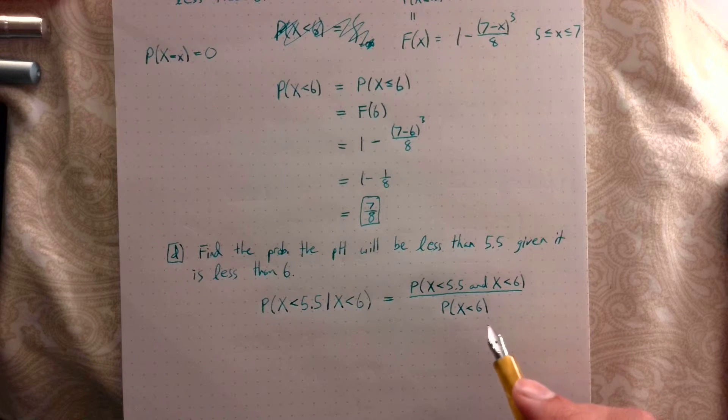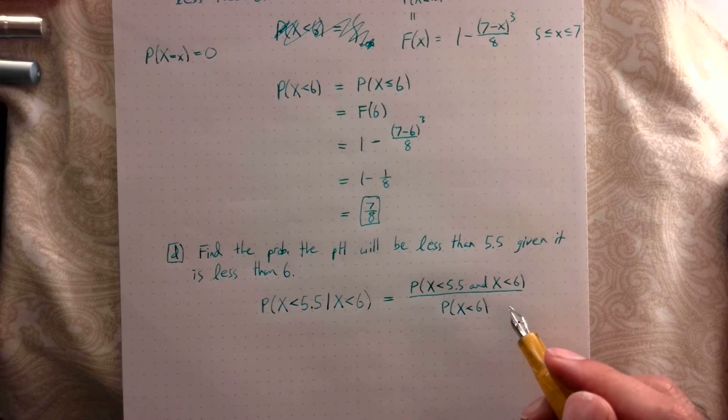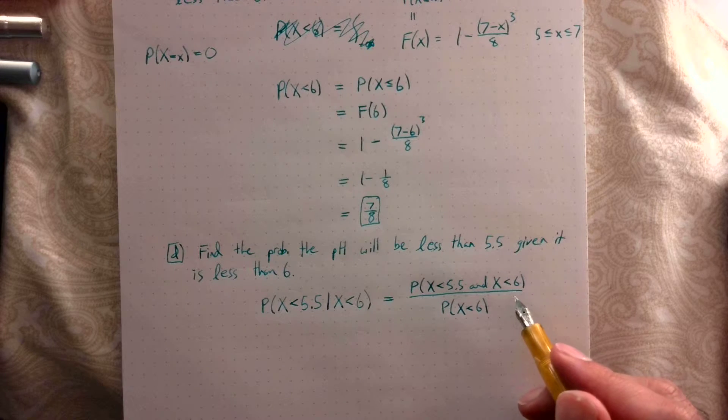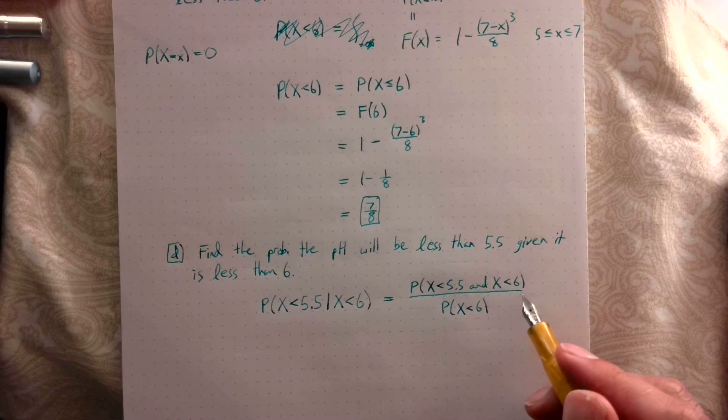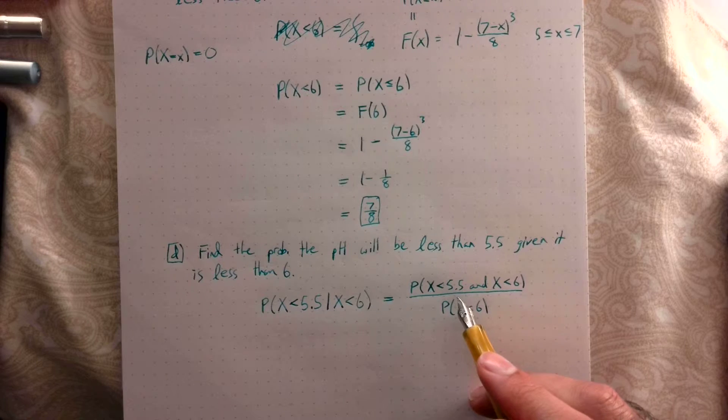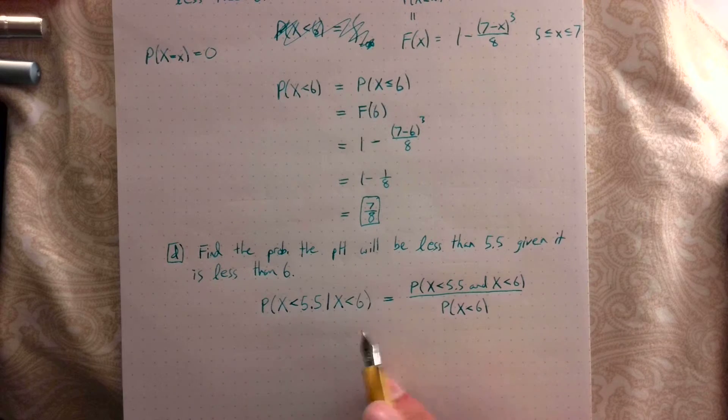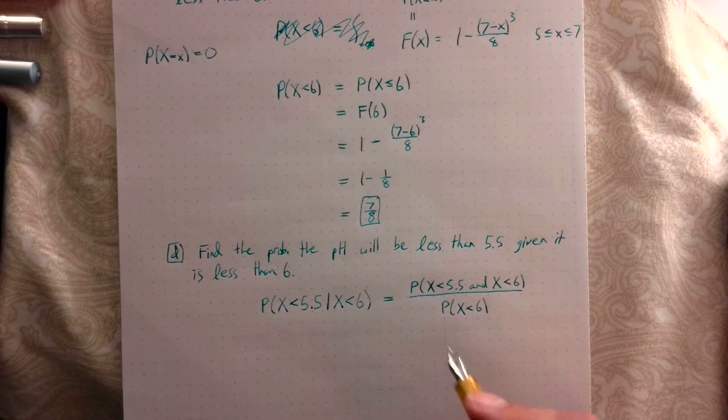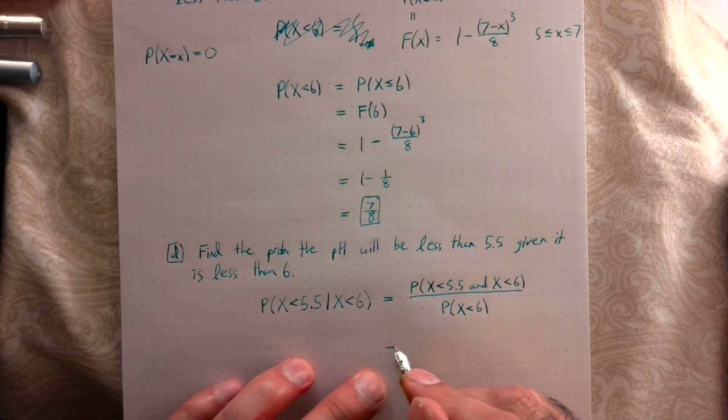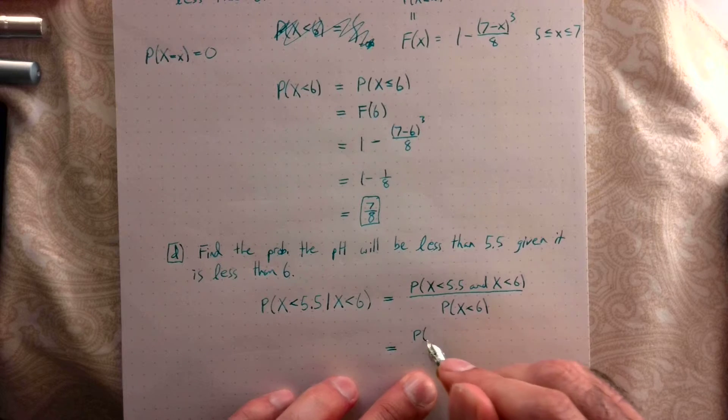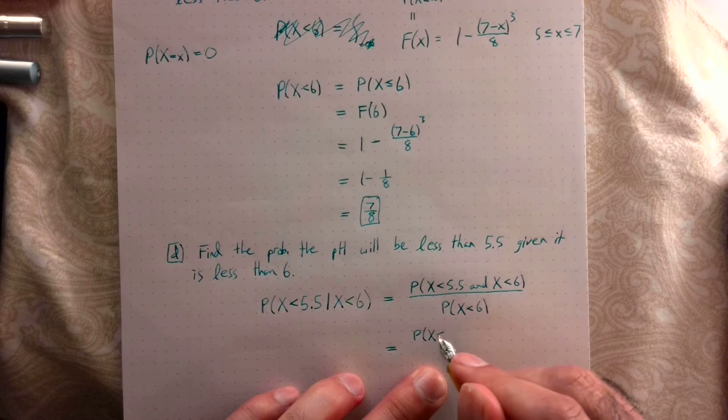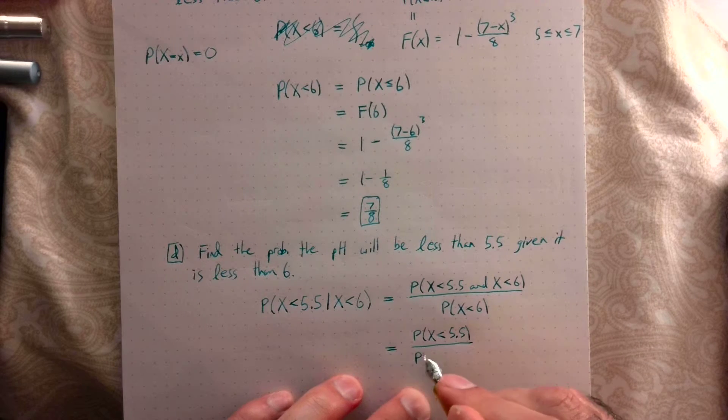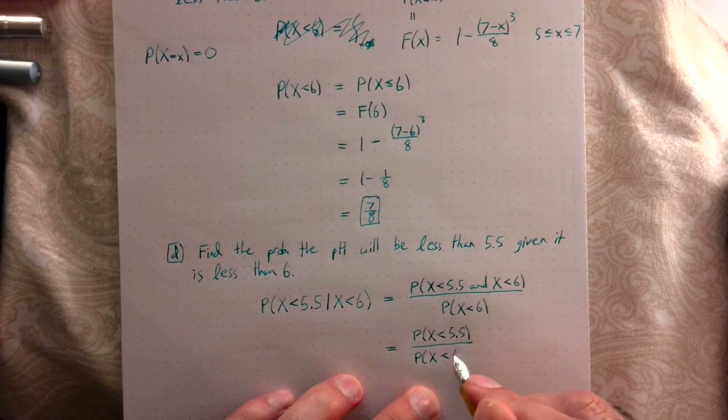So for the top, if X is less than 5.5 and X is less than 6, this fact that X is less than 6 doesn't really tell me anything. If I know it's less than 5.5, that's the key information. Less than 5.5 and less than 6 boils down to just being less than 5.5. So this equals the probability that X is less than 5.5, over the probability that X is less than 6.